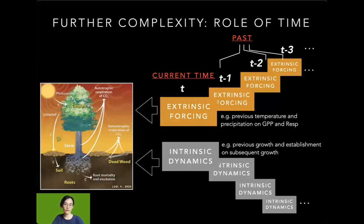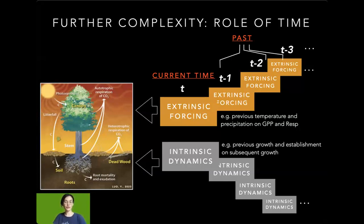On top of this complexity, not only the current extrinsic forcing and intrinsic dynamics will have an impact, but also those conditions of the past. For example, previous temperature and precipitation have an effect on GPP and sideways variation. On the intrinsic side, previous growth and vegetation establishment will have an impact on subsequent growth. Sometimes those factors get entangled and it's difficult to disentangle which one is extrinsic and what is intrinsic, but it's fair to say that both aspects are happening.